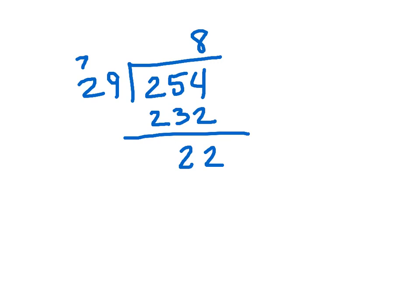You end up with 22. That's less than 29, and nothing left to bring down. So you end up with 8 with the remainder of 22.